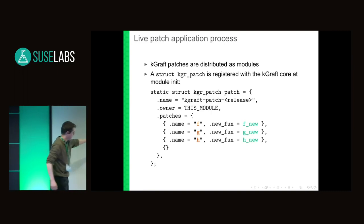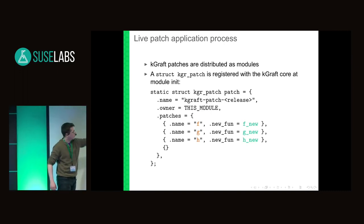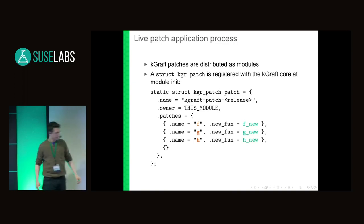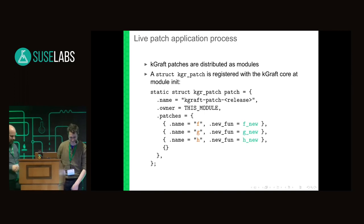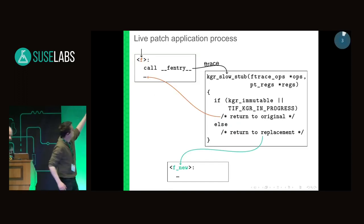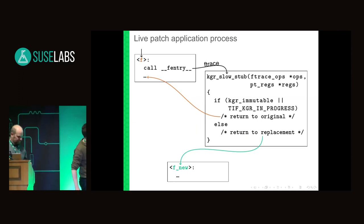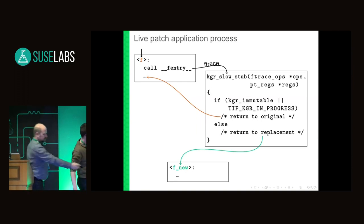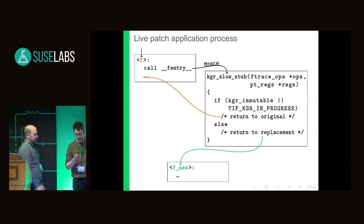Importantly, the patch structure contains a list of functions to be patched and what the replacements would be. The KGRAFT core installs some F-trace operations at each of the to-be-patched functions, and the KGRAFT handlers would either return to the original or to the new live-patched fixed replacement.